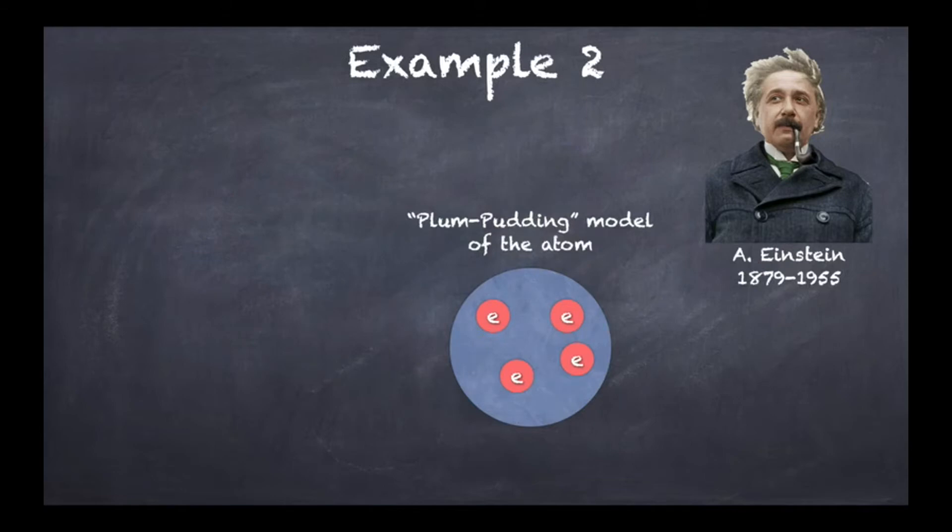If you take the best model that people had at the time of atoms, this was called the plum pudding model. In this model, you would have electrons which are actual particles that are either sitting at some set place or maybe moving around in a neutralizing positively charged background. Einstein said, well, if we imagine that light is made of particles, then this particle of light can come in and kick out an electron from an atom. This could actually explain quantitatively what was going on with the photoelectric effect.